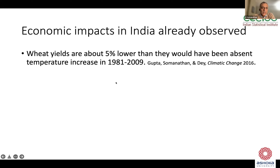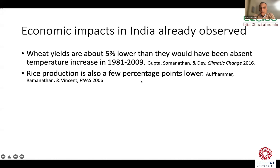It's important to recognize that wheat yields have been growing — they grew by a factor of about 2.5 over this period thanks to technical progress — but relative to what they would have been, they're lower. Rice production is also a few percentage points lower than it would have been. That's a paper by Alfham, Ramanauddin, and Vincent, which is now fairly old, and there have been more studies showing pretty much the same thing.